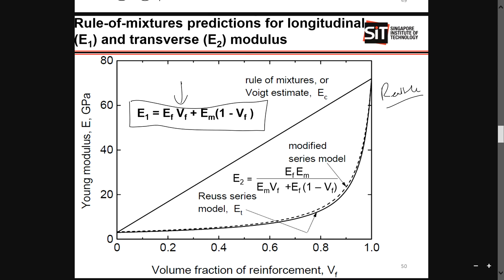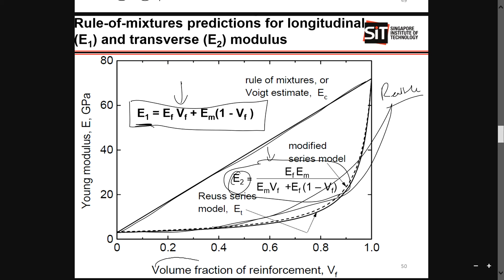In the longitudinal video we talked about E1, and in the transverse video we talked about E2. This graph illustrates the curves: the E1 curve is a straight line, while the E2 curve is an exponential curve. It is determined by the volume fraction of the reinforced fiber compared to the Young's modulus, because the equation is in terms of the volume fraction of the fiber.